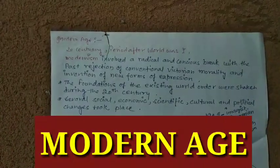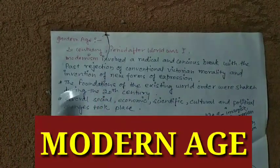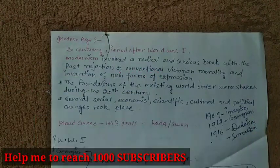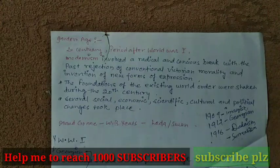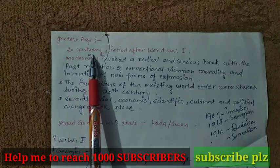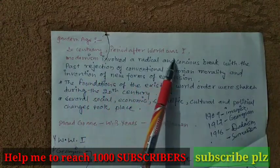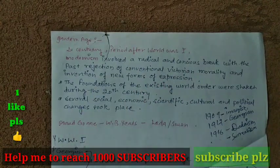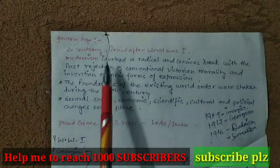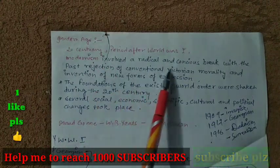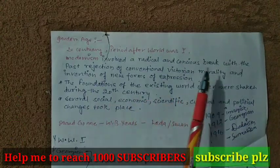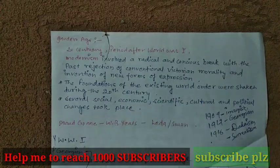In this video, we are going to talk about Modern Age, and later we will be talking about Georgian poetry, Dadaism, and Surrealism. Modern Age or modernism involved a radical and conscious break with the past, rejection of conventional Victorian morality, and invention of new forms of expression.